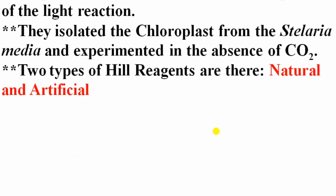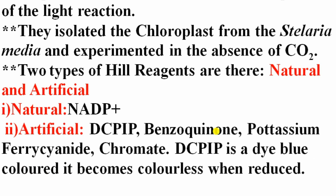Hill and Bendall proved that there are two types of Hill reagent — natural and artificial. The natural Hill reagent is NADP⁺. Artificial Hill reagents include DCPIP (dichlorophenolindophenol), benzoquinone, potassium ferricyanide, and chromate. DCPIP is a blue-colored dye that becomes colorless when reduced.